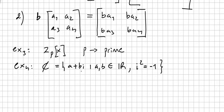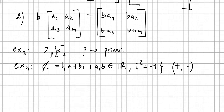Another example is the complex numbers. As everybody knows, they have the form a + bi, where a and b are real numbers and i² = −1. The complex numbers form a vector space over the reals, under the usual addition and multiplication of complex numbers.